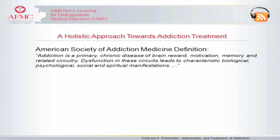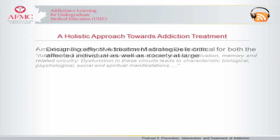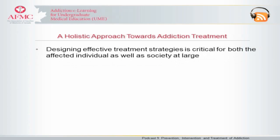To revisit the definition provided in the introductory podcast in this series, the American Society of Addiction Medicine defines addiction as a primary chronic disease of brain reward, motivation, memory, and related circuitry. Dysfunction in these circuits leads to characteristic biological, psychological, social, and spiritual manifestations. The disease has devastating implications, including personal consequences for the user and societal consequences that constrain the existing health care system. So designing effective treatment strategies is critical for both the affected individual as well as society at large.